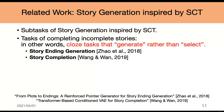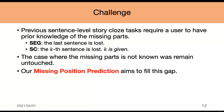In story ending generation, the last sentence of the 5-sentence story is removed, and the objective is to generate the last sentence. In story completion, the objective is to generate a missing sentence, and the missing part is not restricted to the last sentence. This is the challenge of our task: previous sentence-level story cloze tasks require a user to have prior knowledge of the missing part. In SCT, the last sentence is missing. In story completion, the missing sentence position is given. The case where the missing part is not known remained untouched. Our Missing Portion Prediction, or MPP, aims to fill this gap.